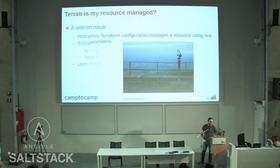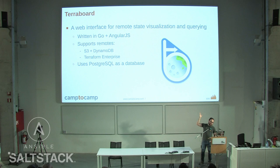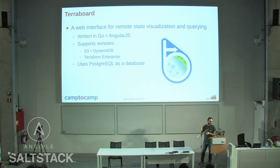Remote states are essentially JSON documents stored in different backends. They can be versioned if the remote supports it — for example, using a versioned S3 bucket gives you versions of your state. Remote states contain metadata like the resources applied, the modules used in your Terraform code, and the parameters and attributes for each resource, plus outputs in more recent versions. We thought: often the question comes up 'where is my resource managed?' All this information is in states somewhere on an S3 bucket — so the idea was to create a web interface called TerraBoard to get this information, put it in a database, and provide a web interface to visualize and query it.